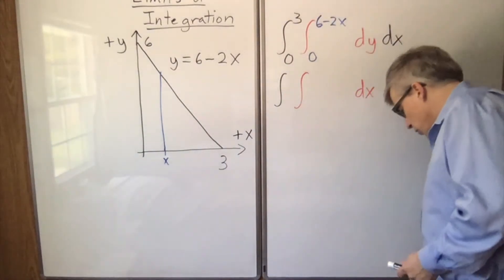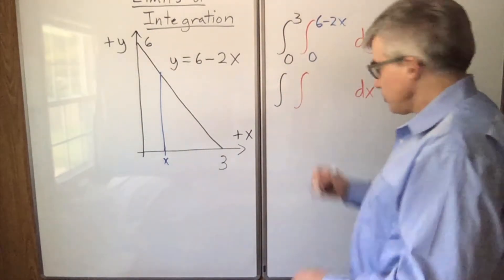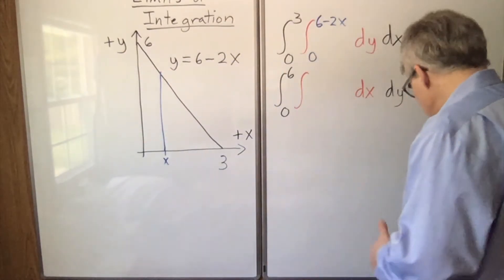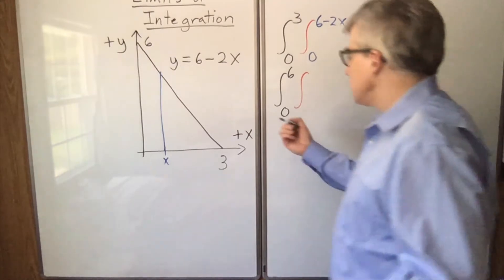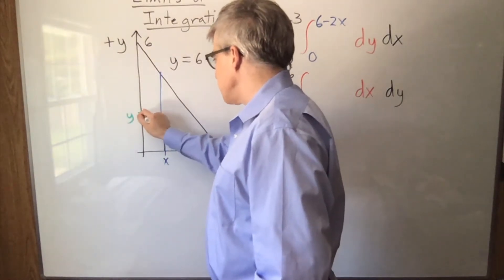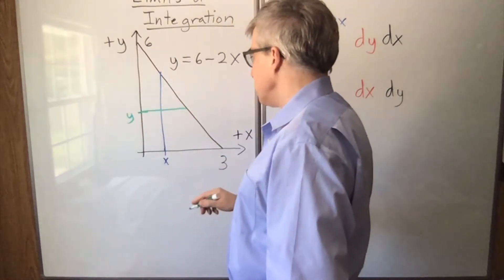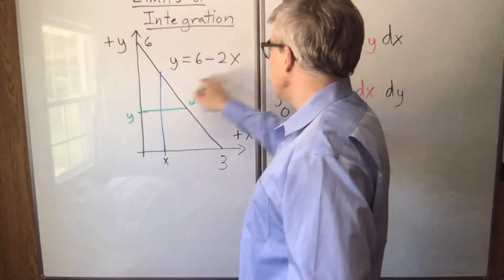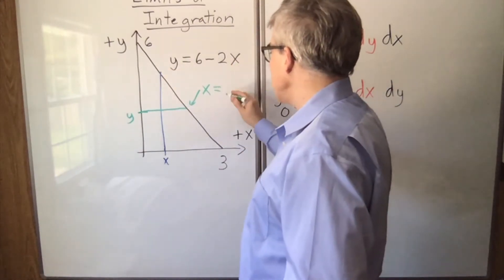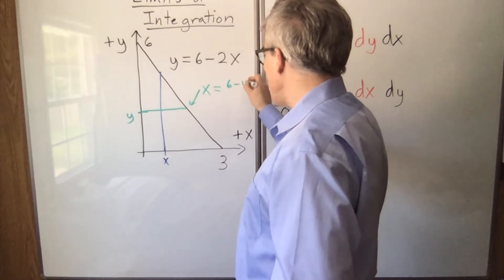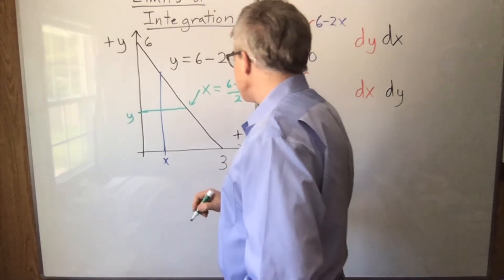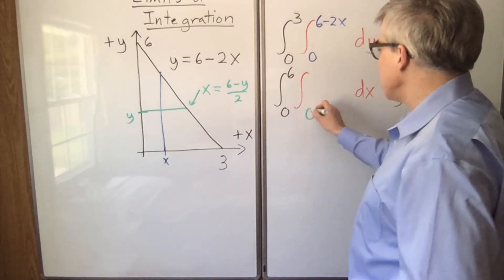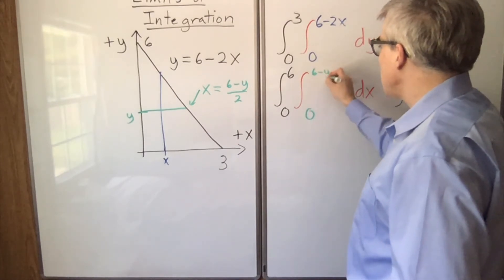If you do it in the other order, however, y is the outer limit, so y simply runs from 0 to 6. x is now the one that's going to vary. Pick a random y, and x varies from here to here. Now this x, 2x is 6 minus y, so x is 6 minus y over 2. So the x integral is going to range from 0 to 6 minus y over 2.